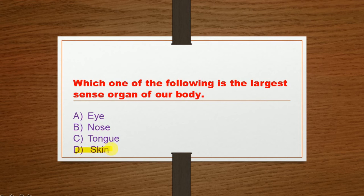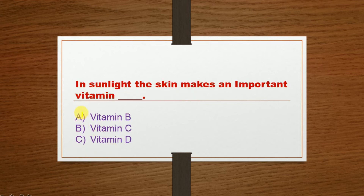Next question: In sunlight, the skin makes an important vitamin — dash. Option A: Vitamin B, Option B: Vitamin C, Option C: Vitamin D. The correct option is Option C: Vitamin D.